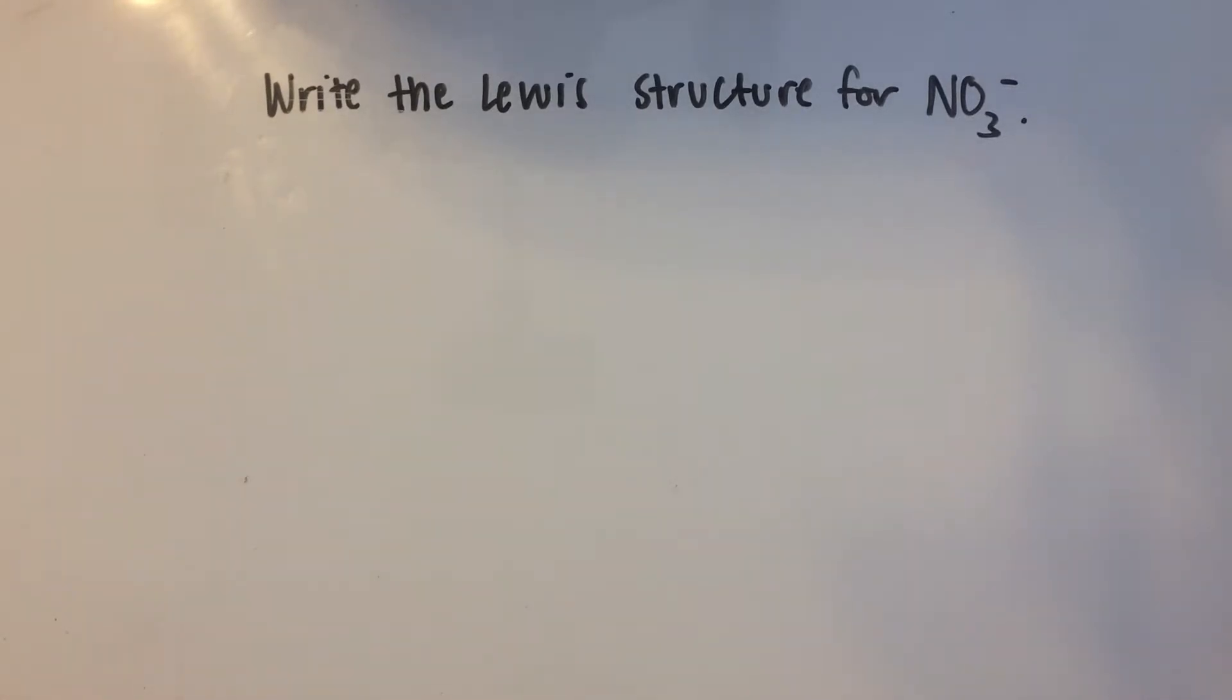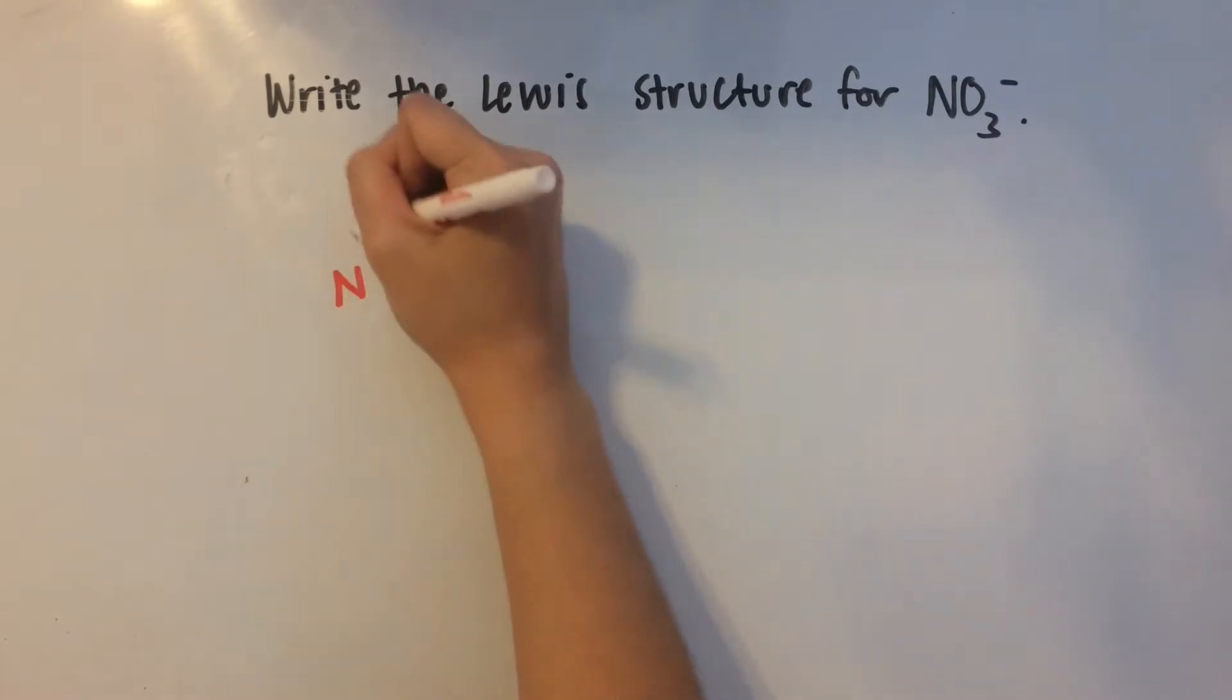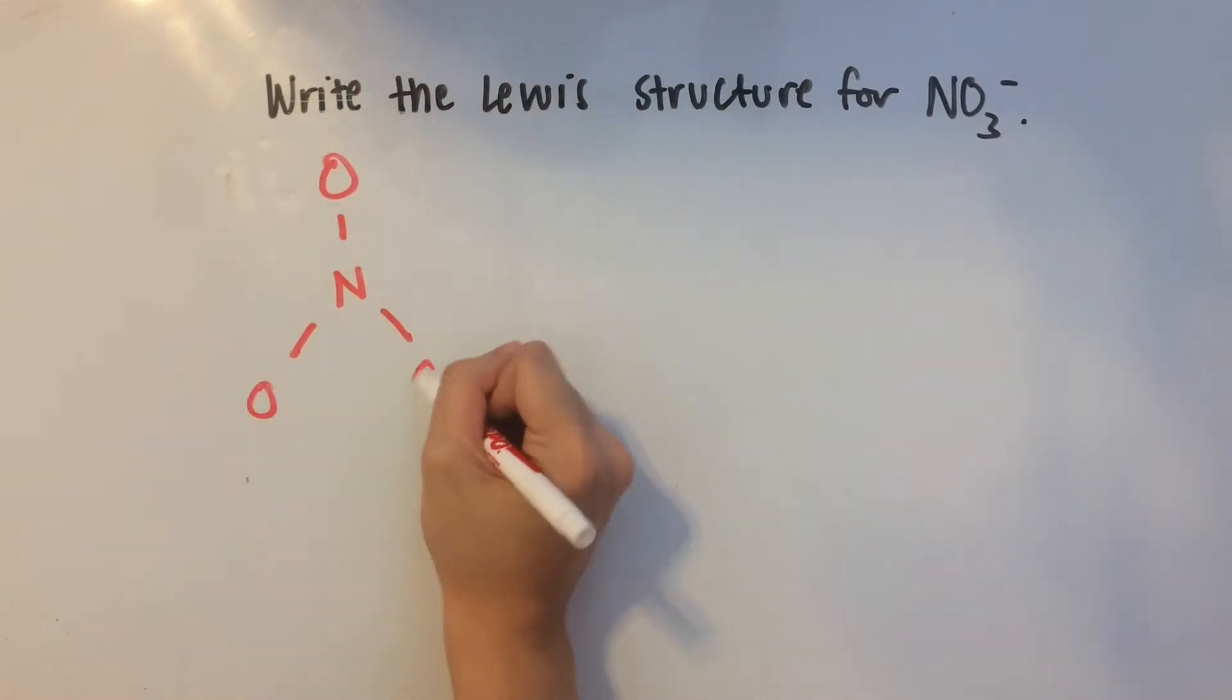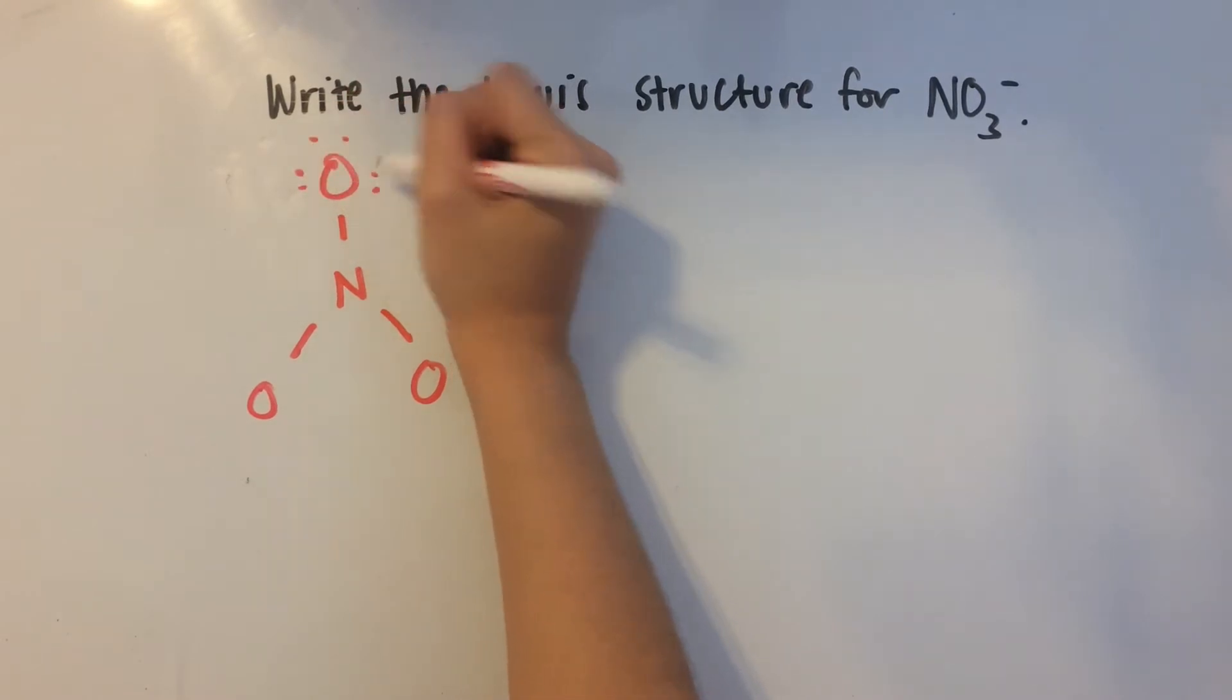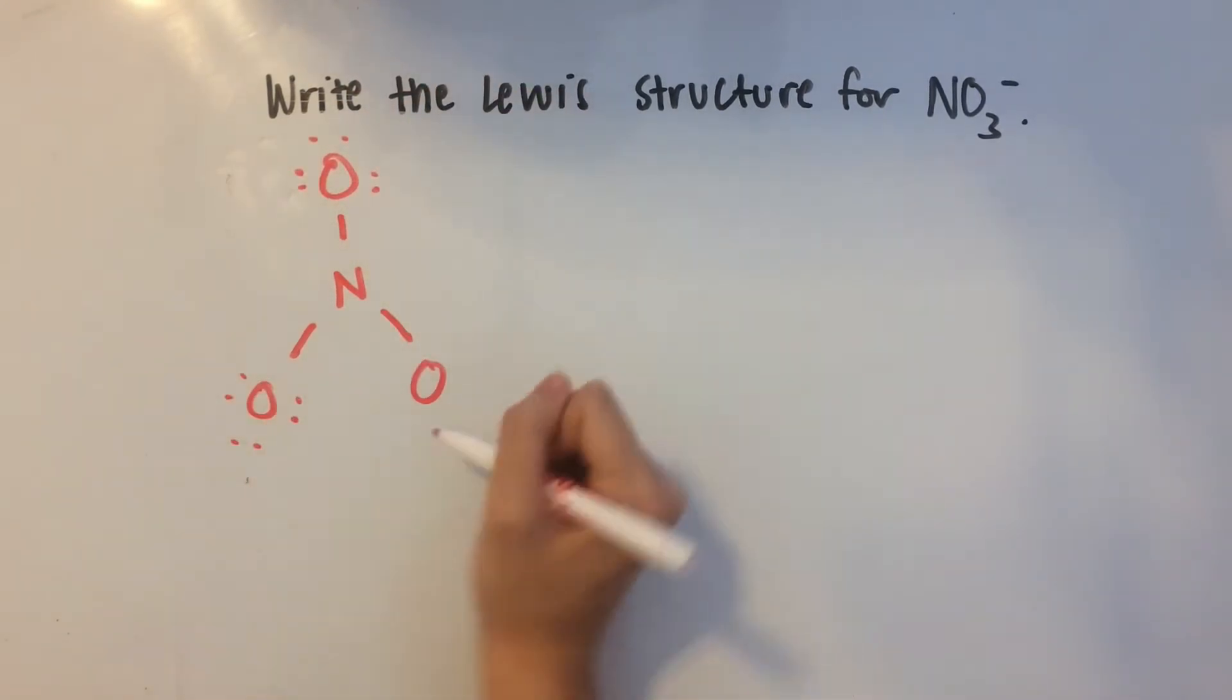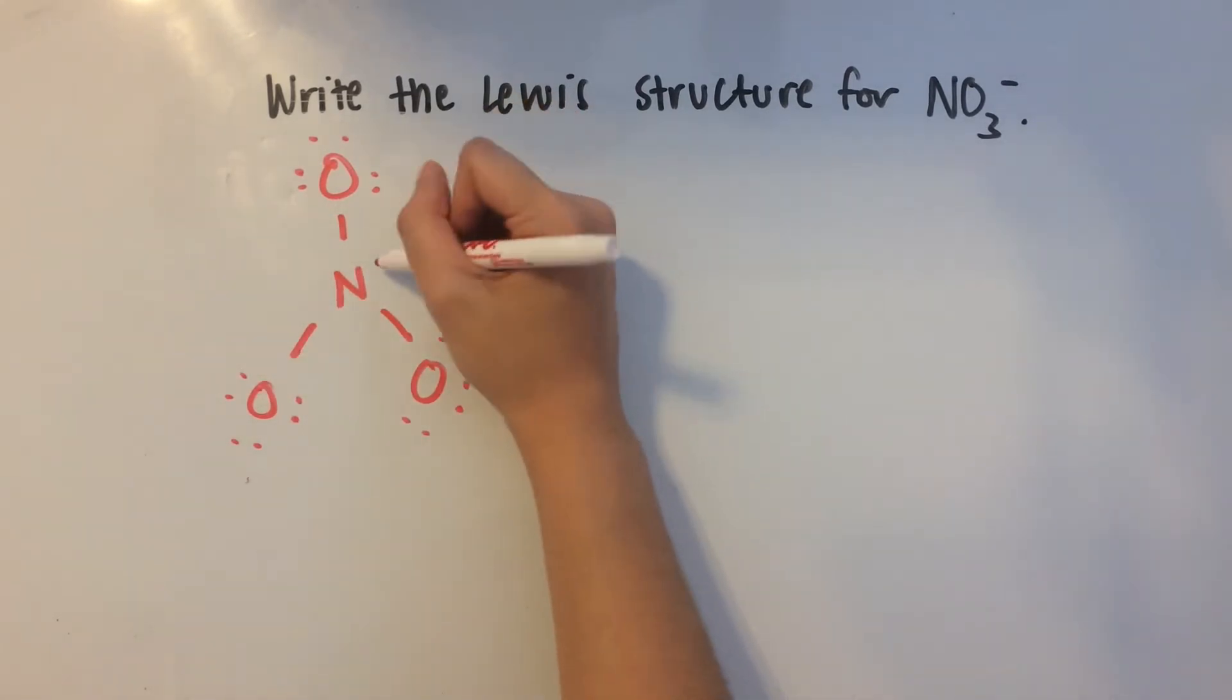Here we're asked to write the Lewis structure for NO3- and this is going to involve resonance structures. So let's write out one example of the Lewis structure for nitrate. If you've seen my previous video, what I like to do is give everything an octet first and I also like to connect the elements together.